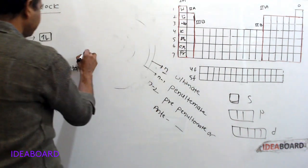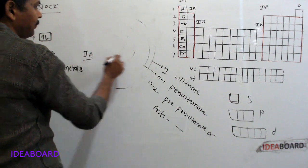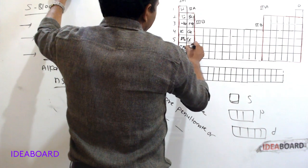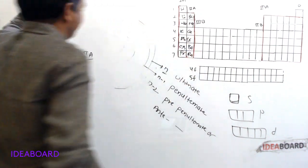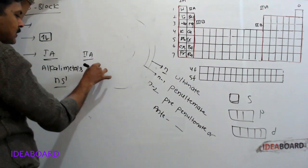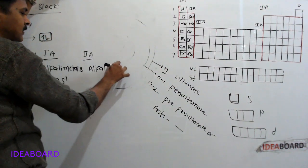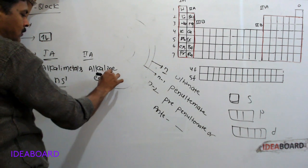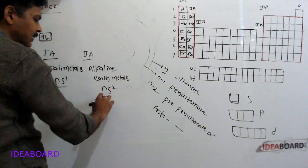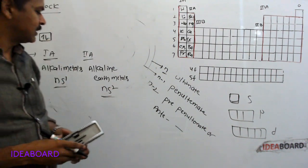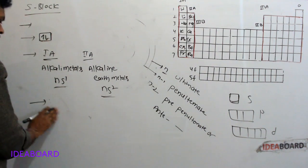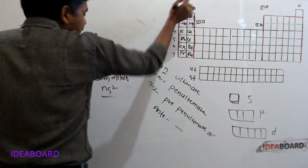The second A group elements are beryllium, magnesium, calcium, strontium, barium, and radium. These are called alkaline earth metals. Their valence orbit electronic configuration is Ns2. All S block elements are metals except hydrogen.